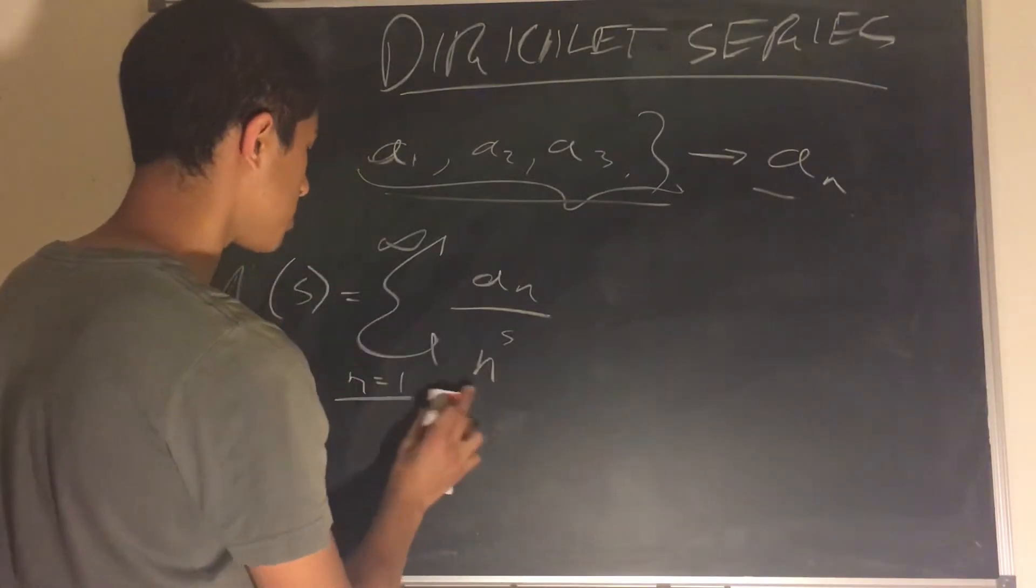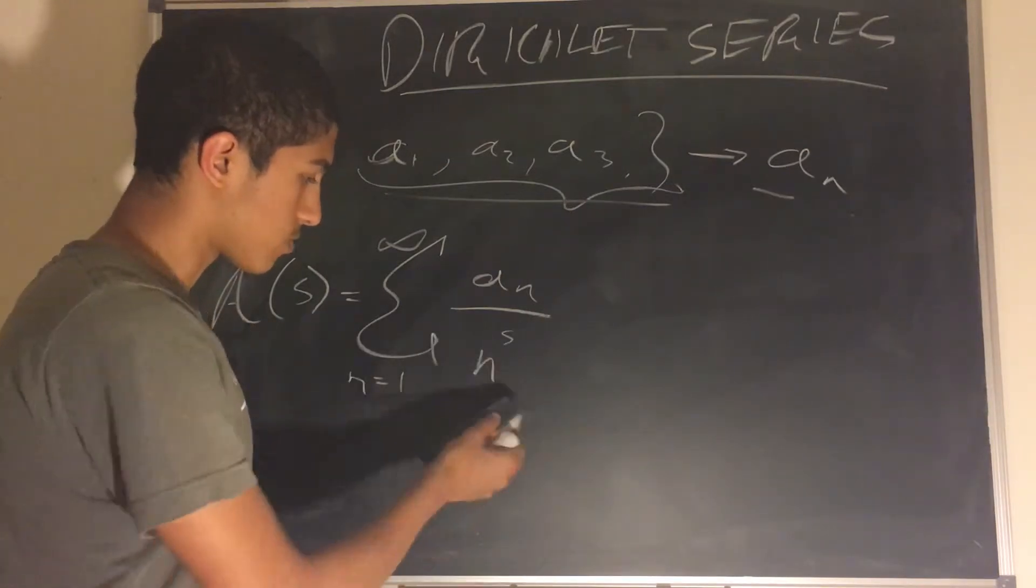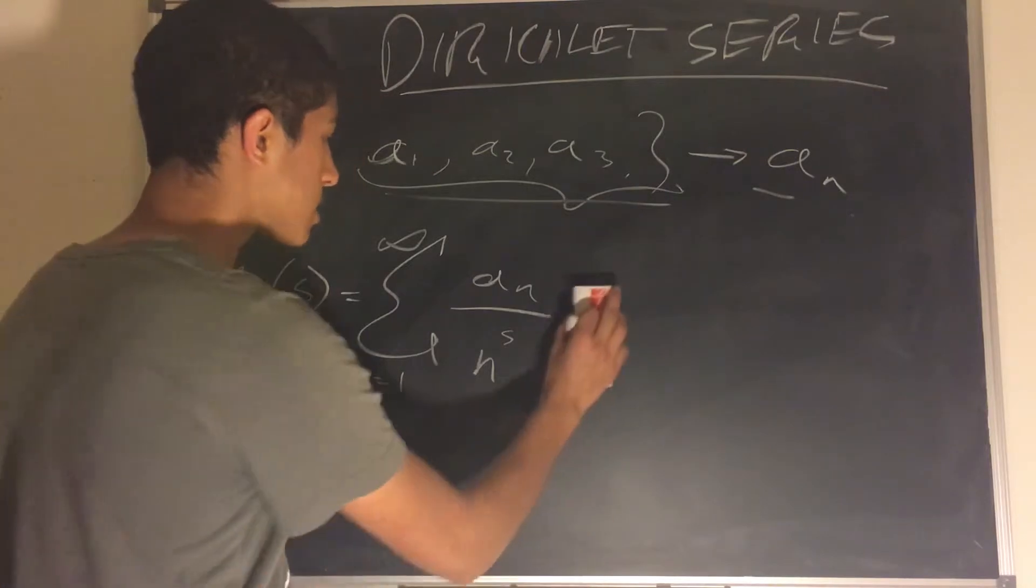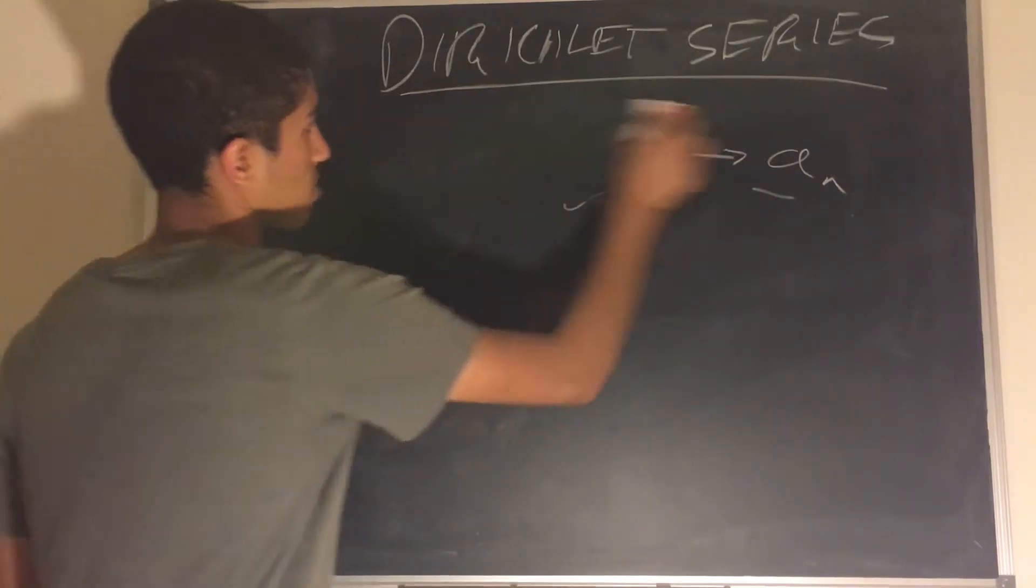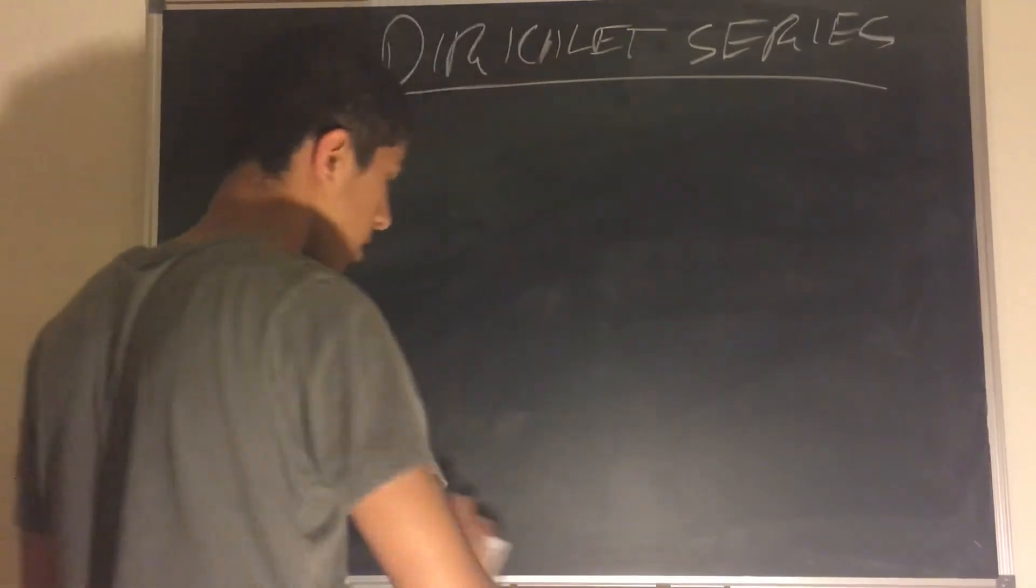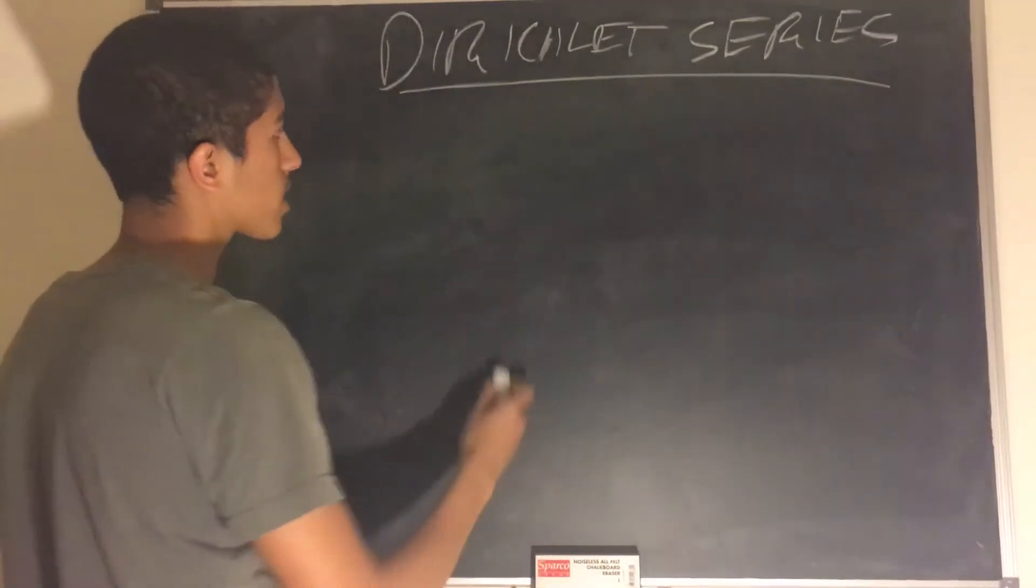This might seem a little bit abstract, and why are you making a series which is represented in this specific way, but it tends to work very well with other things from number theory, like for example, Dirichlet convolutions. So if you recall, a Dirichlet convolution,